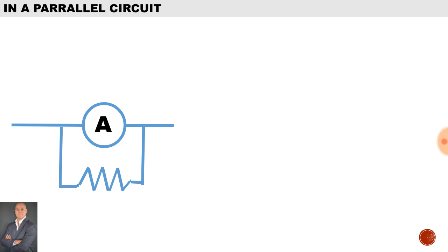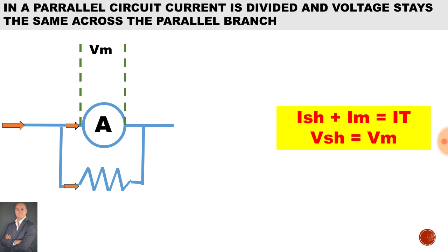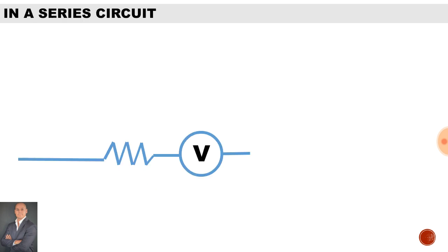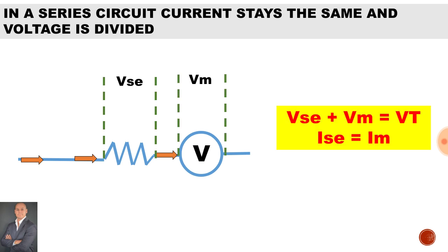In a parallel circuit, current is divided and the voltage across the parallel branch remains the same. Therefore to calculate the total current it's the current through the shunt winding plus the current through the meter, and the volt drop will be the same across the meter and the shunt winding. In a series circuit, current stays the same and voltage is divided. To calculate the total voltage it's the volt drop across the winding plus the volt drop across the meter, and the current through the series winding will be the same as the current through the meter.